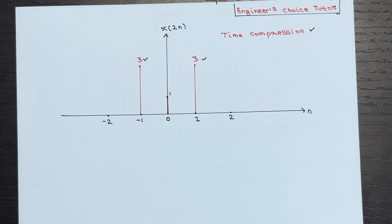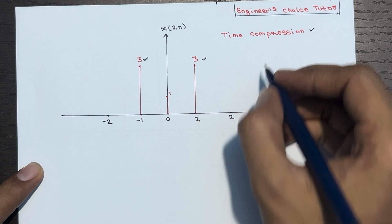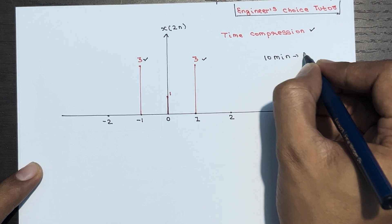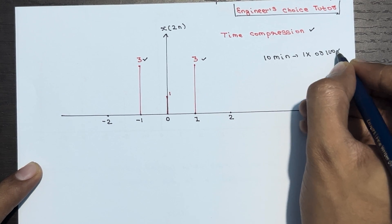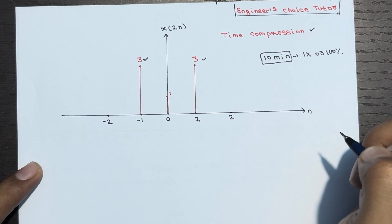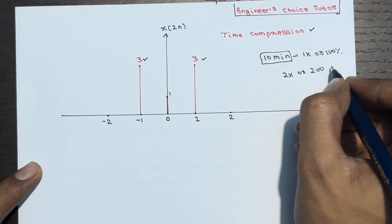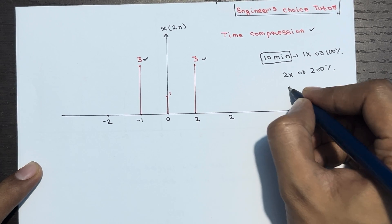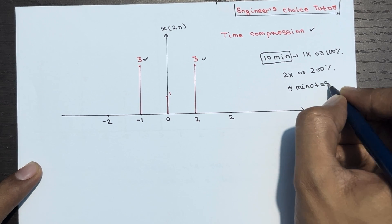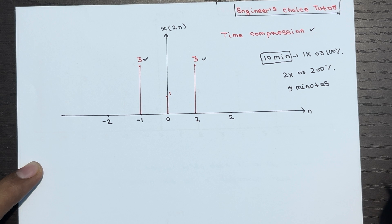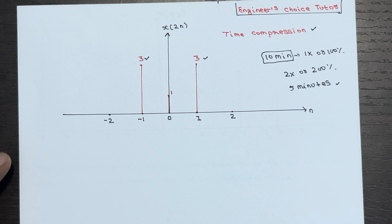A real-time example of time compression: a 10-minute video played at 1x speed takes 10 minutes to finish. But if you play the same video at 2x speed, you can complete it in 5 minutes only. This phenomenon can be likened to time compression, as the same content is presented to viewers at different rates.